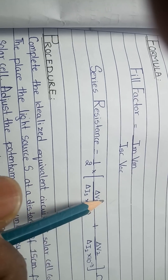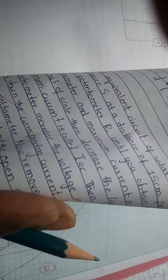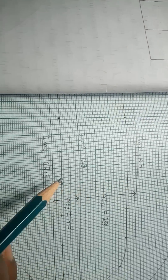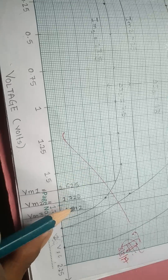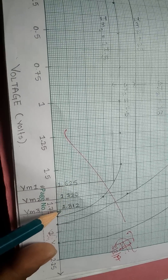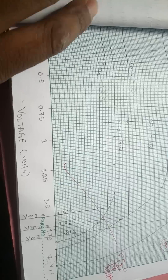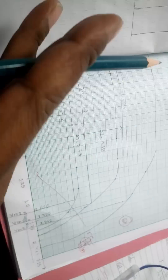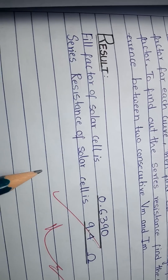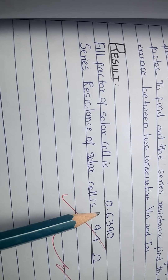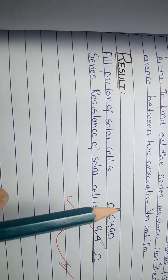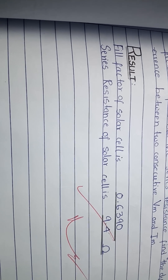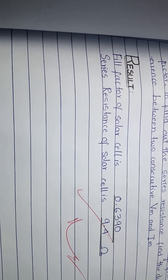For series resistance, you need delta-V1, delta-V2, delta-I1, and delta-I2. Subtract the two rectangle I-values to get delta-I1 and delta-I2, and subtract the two rectangle V-values to get delta-V1 and delta-V2. Substitute these into the series resistance formula. The expected fill factor value is around 0.4 to 0.6, and the series resistance is in the range of 4 to 20 ohms — not higher than 90 or 100.